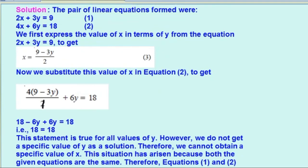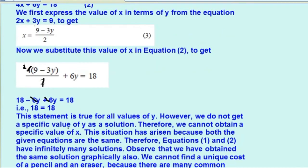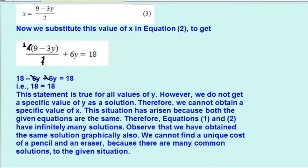इस value को हम equation 2 में replace करेंगे. तो 4 into (9 minus 3y)/2 plus 6y equals to 18. अब 2 यहाँ पर 4 से cut हो जाएगा, तो बचा 2. 2 into 9 is 18 and 2 into minus 3 is minus 6y, plus 6y equals to 18. अब यहाँ पर minus 6y और plus 6y cut हो जाएंगे, तो answer आएगा 18 equals to 18. This statement is true for all values of y, इसलिए हमें यहाँ पर कोई exact solution नहीं मिलेगा — infinitely many solutions आ सकते हैं.